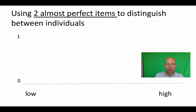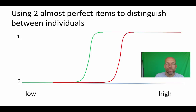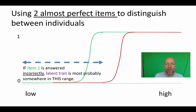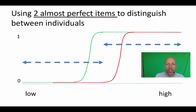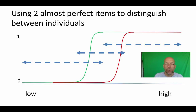Suppose now that we have two almost perfect items to distinguish between individuals. We can say: if item one is answered incorrectly, the latent trait is most probably in this range; if both item one and two are answered correctly, the latent trait is most probably in this other range. The same is true for the intermediate group — those answering one correctly but two incorrectly are probably somewhere in between. So with two almost perfect items we can distinguish between more groups of individuals, although there is still uncertainty about exactly where individuals fall on the latent trait.